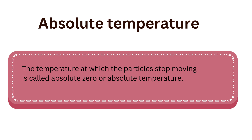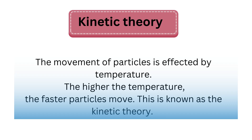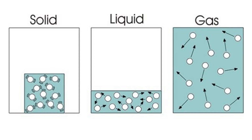The temperature at which particles stop moving is called absolute zero, or absolute temperature — the temperature at which a material has no heat energy. This brings us to the kinetic theory: the higher the temperature, the faster particles move. This is known as the kinetic theory.